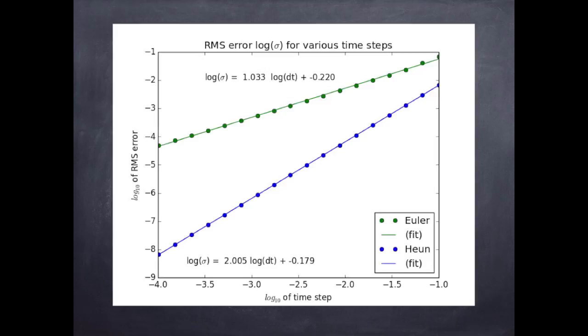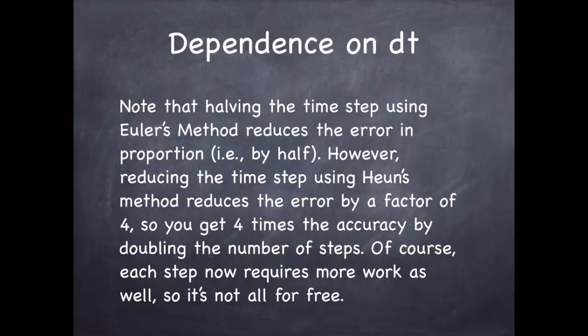In the notebook that you'll be using for the second project, I have a couple of programs in there that illustrate that, and you can see exactly how this graph is produced and exactly what it means. This slide just says exactly what I just said. If you use the Heun method and you have the time step, you get four times the accuracy. If you use the Euler method and you have the time step, you only get double the accuracy.